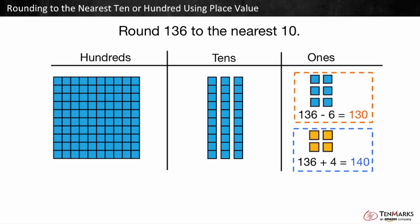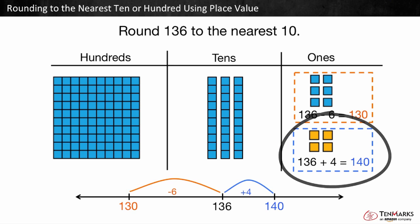Which ten is 136 closer to? 130 or 140? 140, because it is four ones away compared to six ones away. So 136 rounded to the nearest ten is 140.